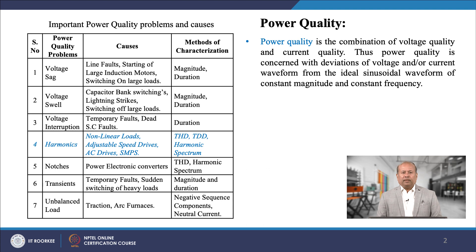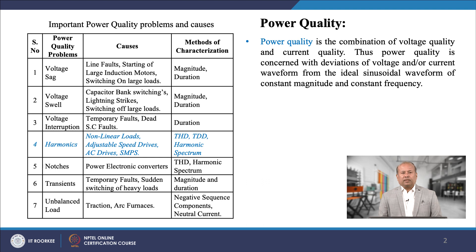Power quality is the combination of voltage quality and current quality. It is mainly concerned with the deviation of voltage and/or current waveform from the ideal expected sinusoidal waveform. There are various power quality issues and problems, and among these the important problems, their causes, and methods of characterization are listed in the table.